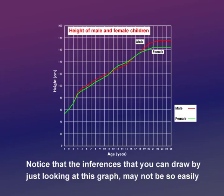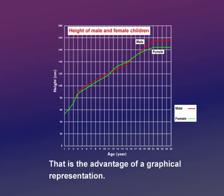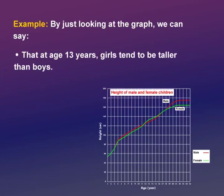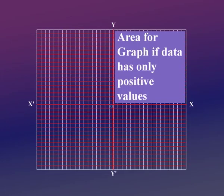Notice that the inference you can draw by just looking at this graph may not be so easily drawn from the data itself — that is the advantage of a graphical representation. For example, by just looking at the graph we can say that at age 13, girls tend to be taller than boys, and at age 18 and above, boys tend to be taller than girls.